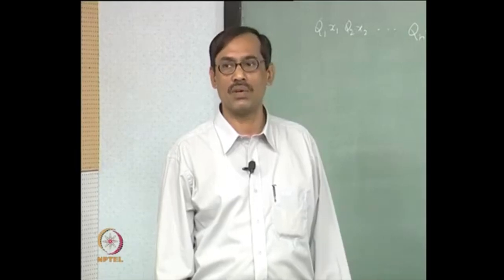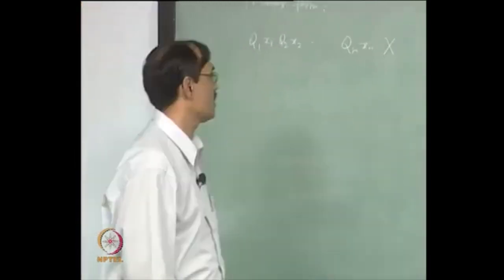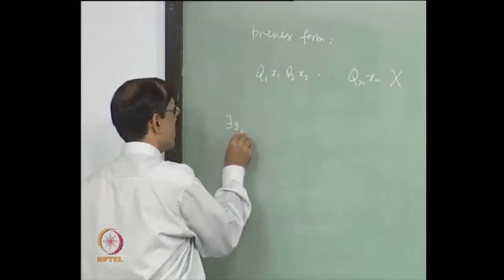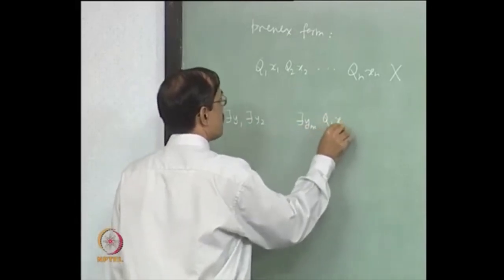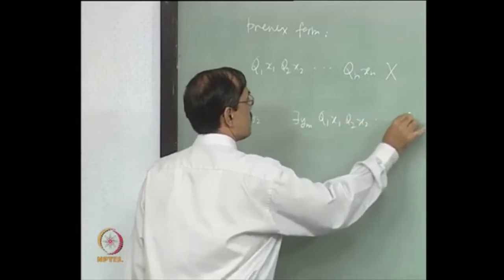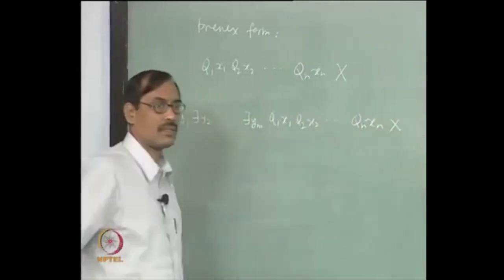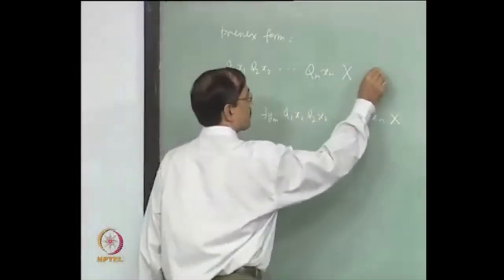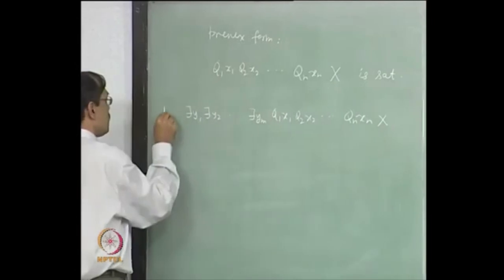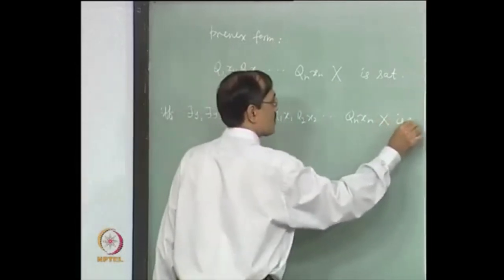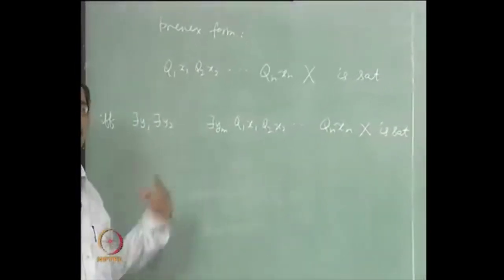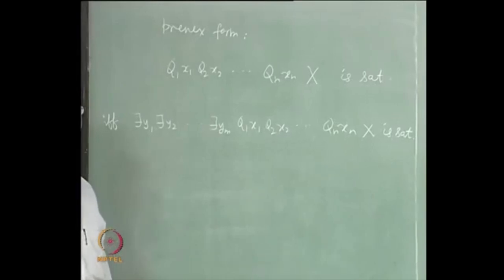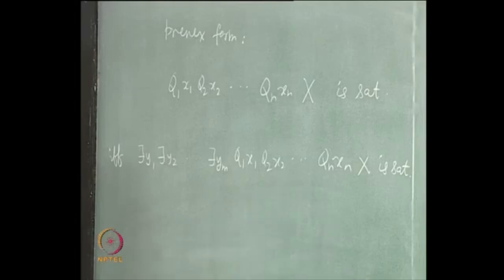Suppose we have free variables y1 to ym in the formula. Then we can take ∃y1, ∃y2, ..., ∃ym, then Q1 x1, Q2 x2, ..., Qn xn, followed by the matrix. This formula is satisfiable if and only if its existential closure is also satisfiable. Now we have reached one sentence which is satisfiable or not. Our aim is to get rid of the prefix from this sentence, somehow still preserving satisfiability.